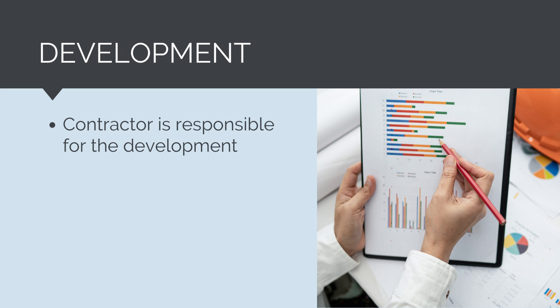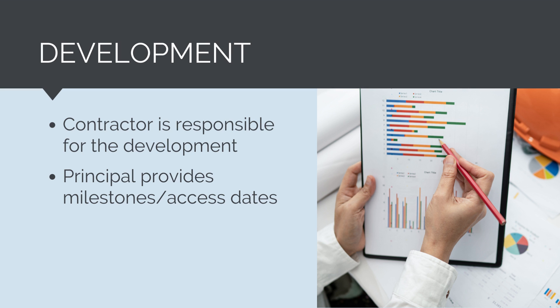The contractor is responsible for the development of the project schedule. They'll typically do this at tender while bidding for the works. The principal will provide milestones and access dates for the contractor to base their program off — for example, we may provide a subcontractor with the date the foundations will be complete so they can commence the structural steel installation.